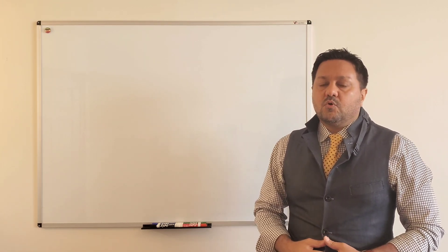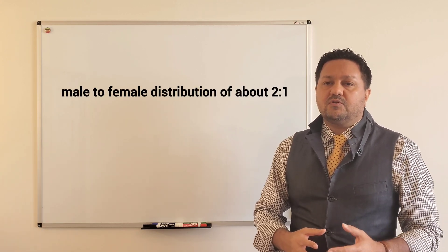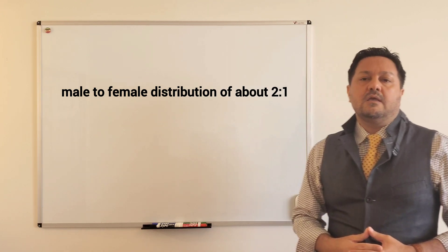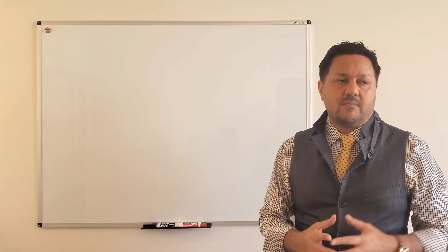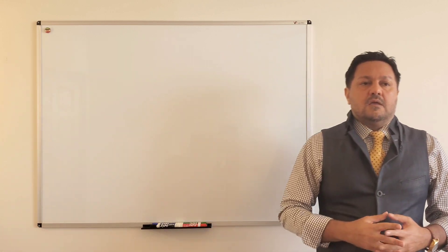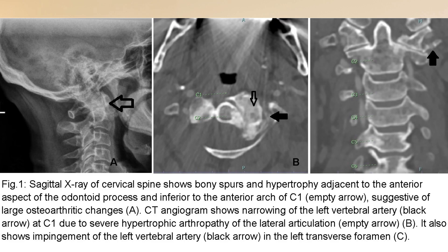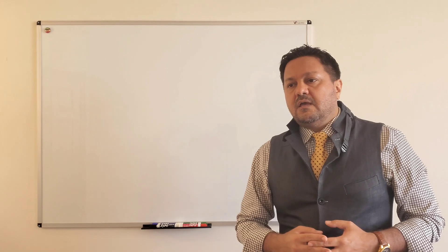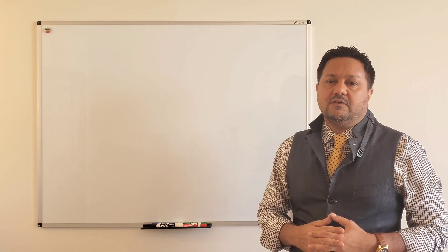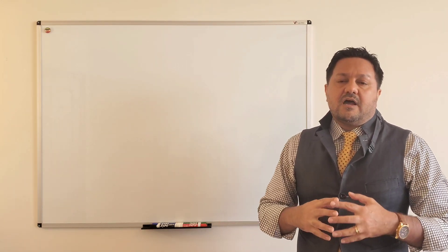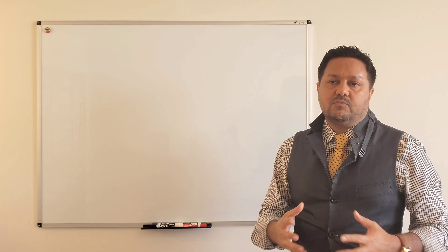Bowhunter syndrome is more common in males compared to females, with a ratio of about two to one. Diagnosis is made with a combination of history, physical exam, and radiographical evidence. X-ray of the neck can identify bony or osteoarthritic changes. CT or MR angiography can show evidence of compression on the vertebral artery, and ultrasonography with Doppler can assess blood flow. The gold standard diagnostic modality is cerebral angiogram.